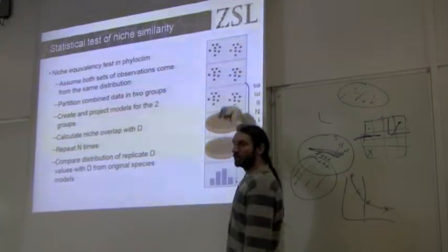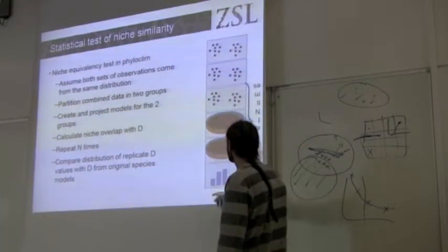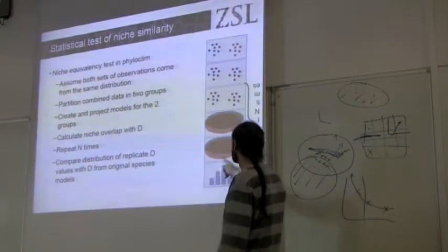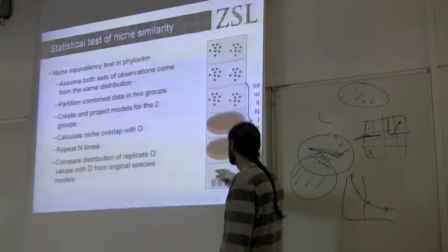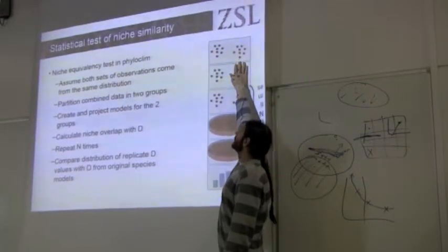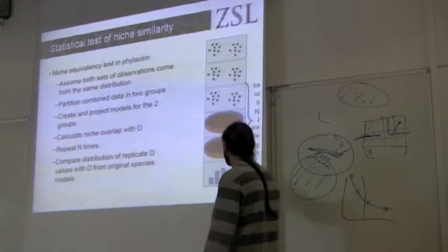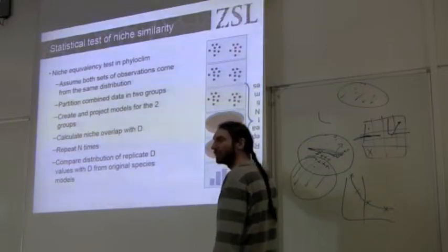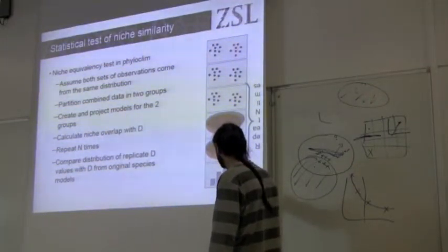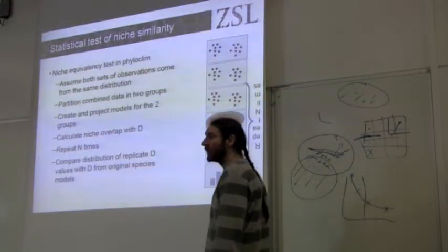We end up with a value — say D of 0.8. We do this a lot of times: a hundred times, a thousand times, depending on how much time we have. We end up with a distribution profile of our metric. We run a hundred replicates and we compare the observed statistic, D or I, based on our real species, and we see where that falls in relation to our randomizations. If it's outside of the 99th percentile, I would say it's significant. This gives us a statistical test to say whether these two niches are the same or different.